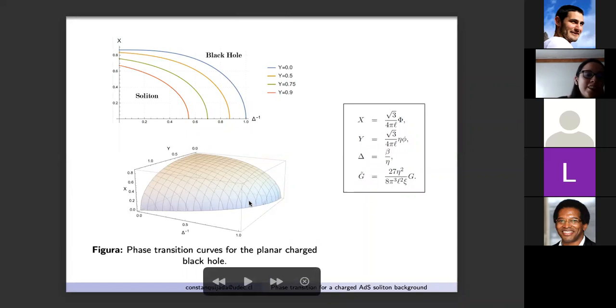We can see on the top of the curves the energies of the solutions are equal so we have a second order phase transition between them. In other words, the two phases, the black hole and the soliton, coexist. Outside of these curves first order phase transitions occur. Below the curves the soliton phase dominates. Also we can note that phase transition occurs when the temperature is equal to zero, which is different from what happens in the Hawking phase transition.